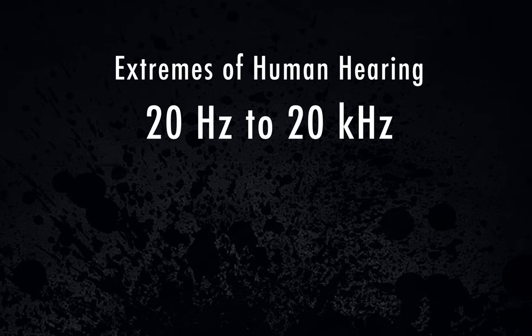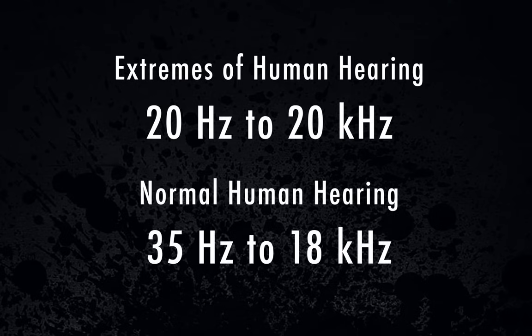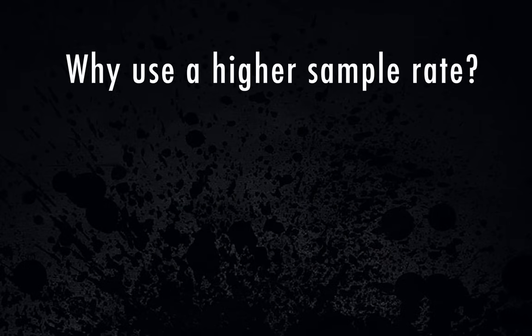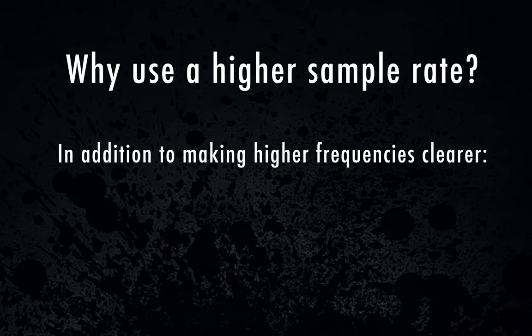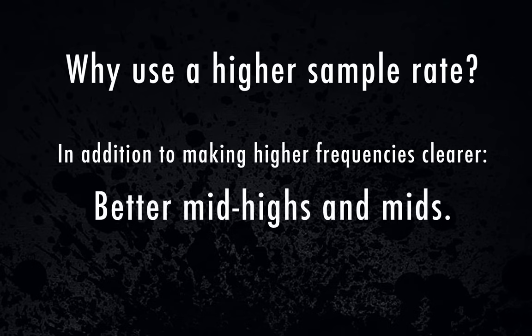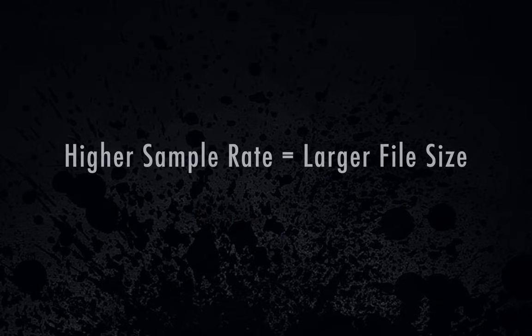The outer extremes of human hearing are from about 20 Hz to 20,000 Hz, although not too many people can hear below about 35 Hz or above 18,000 Hz. So you might ask: if 44,100 can reproduce 22,050 Hz, what's the point of a higher sample rate? Well, when you use a higher sample rate, not only are your most extreme upper frequencies crisper and clearer, so are your mid-highs and mid-range frequencies, because they're resampled more accurately. There is an advantage to using a higher sample rate like 48, 88, or 96, but keep in mind the higher your sample rate, the larger your file size.